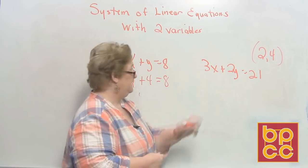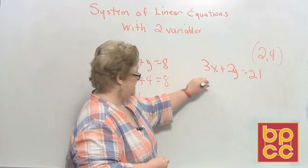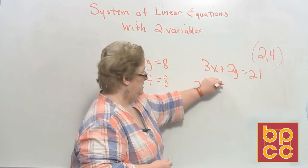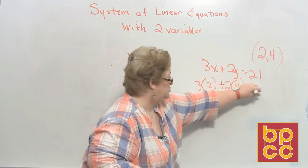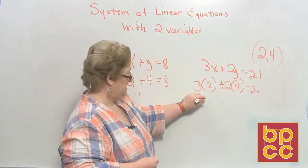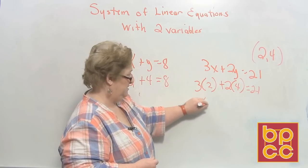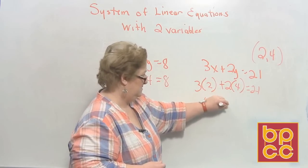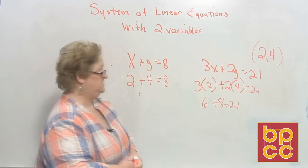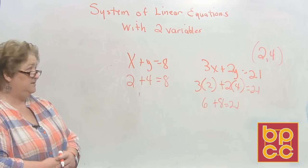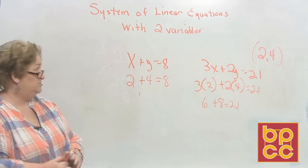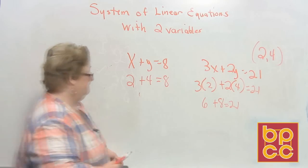Let's try the second equation. 3 times 2 plus 2 times 4 equals 21. That's 6 plus 8. That doesn't work at all. They don't have anything in common. So 2 comma 4 is not a solution for these two equations.